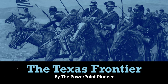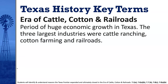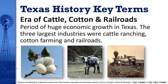The first thing we're talking about is the Texas frontier, and a question that usually comes to mind is: what is the frontier? We do have a key term for that. Our first key term, however, is the Era of Cattle, Cotton, and Railroads — the era we're studying in this unit. It is the period of huge economic growth in Texas. The three largest industries were cattle ranching, cotton farming, and railroads, which were being built and becoming a big industry in Texas.